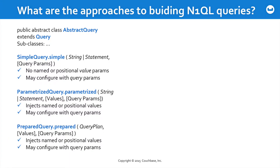Last, there's the PreparedQuery that allows you to pass in a query plan. This is where you've pre-executed a query to determine in advance how the server chooses to plan and optimize it. You take the resulting plan and pass it along so that you bypass the need for the query to be analyzed by the server as part of each request — obviously this will speed up and optimize things. Here you can also inject named or positional values, as well as configure with query parameters.